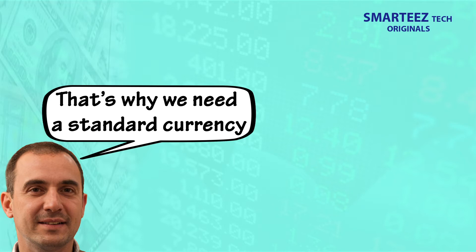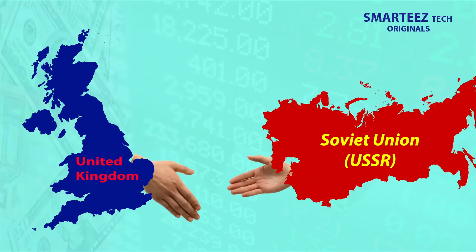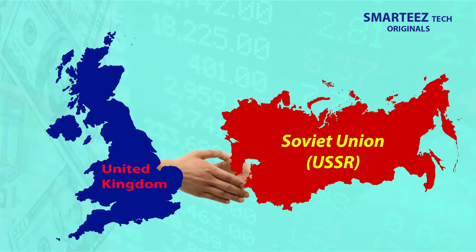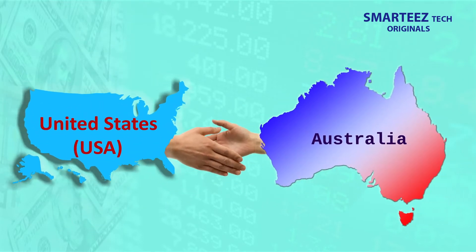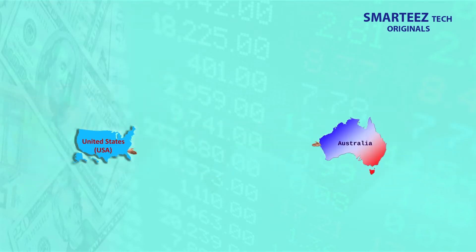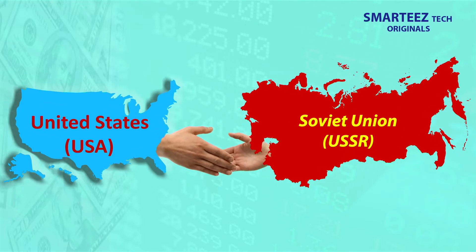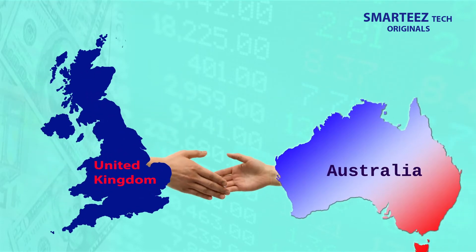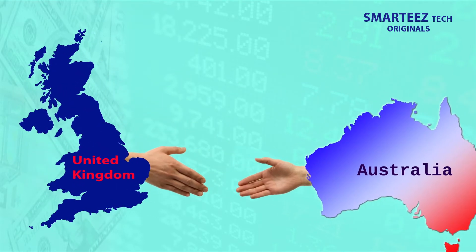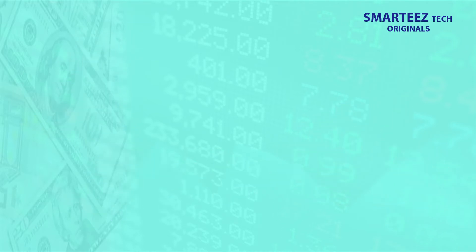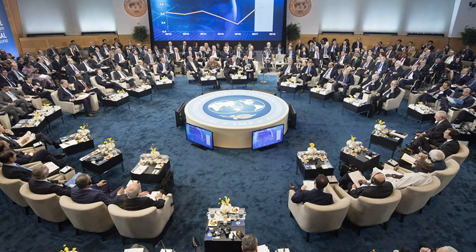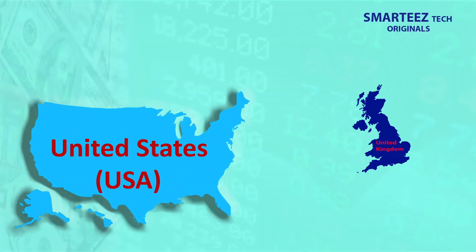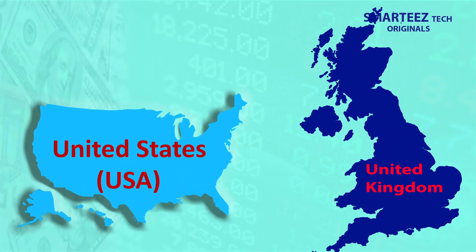In order for bilateral trade to happen, a standard currency had to be defined — this was an important agenda item at the conference. One of the other key goals of the Bretton Woods Conference was to establish multilateral economic cooperation among countries. The idea was to push open markets with far fewer barriers than the world had seen in prior years, and to help real growth of economies and high employment. A need to establish an international monetary and financial system was stressed by the participating nations.